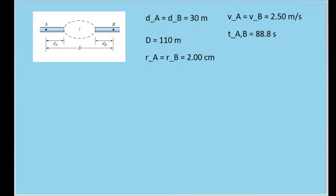We are given all of the dimensions shown in the diagram — the length from point A to point B to the hill where the pipe disappears, and also the total distance from point A to point B. Some hydraulic engineers are going to try to determine the average radius of the pipe within the hill by putting colored dye into the pipe at point A and timing how long it takes for that dye to travel from point A to point B. We find that it takes about 88.8 seconds.